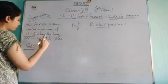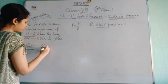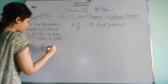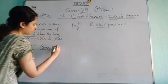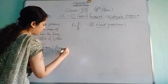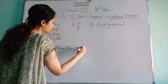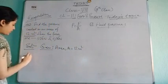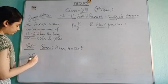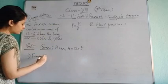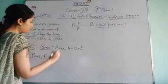So for the first case, we write the given values. Area A equals 12 meter squared. In the first question, Force F1 equals 24 Newton.